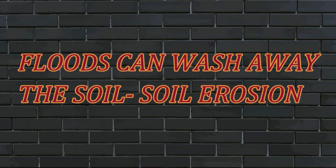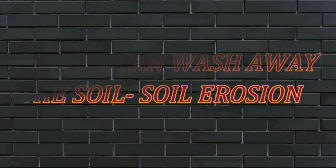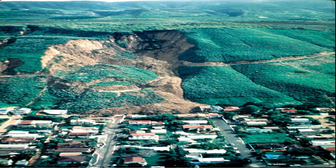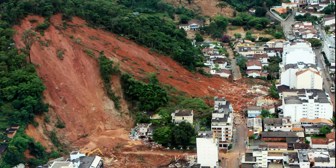Soil erosion removes the most important layer of the soil called topsoil. Landslides can also happen since few trees are left to hold the soil together. Landslides can harm people living at the base of the mountain and on its slopes.